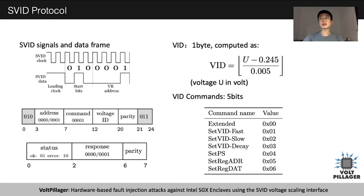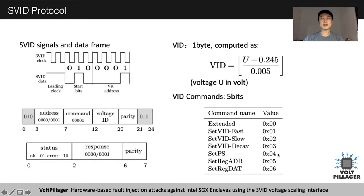Here is the complete SVID protocol as far as we know. The left shows the SVID signal and data frame: it has a few bits indicating the start and end of the frame, four bits indicating the address, a command bit, four bits for VID, and a parity bit. On the right shows how VID is calculated and some VID commands we discovered. The most useful command for this project is setVIDfast, which we use to change the voltage.